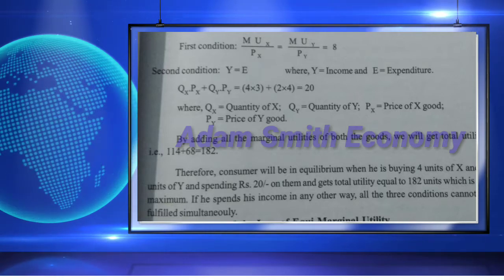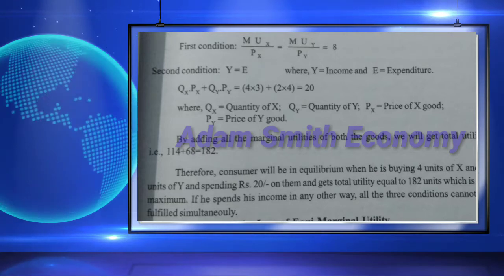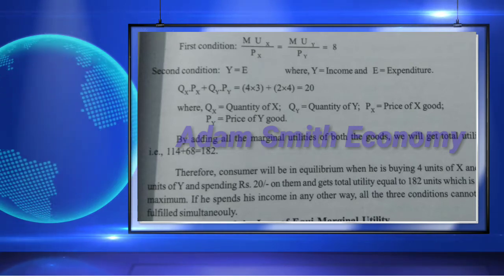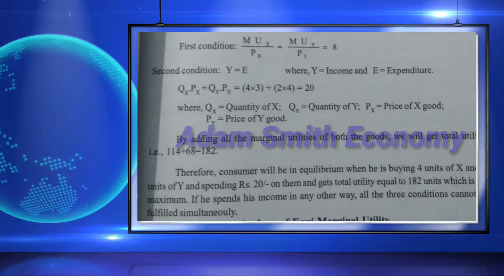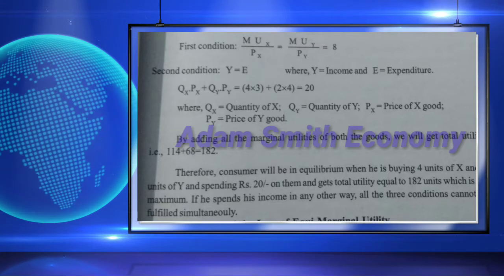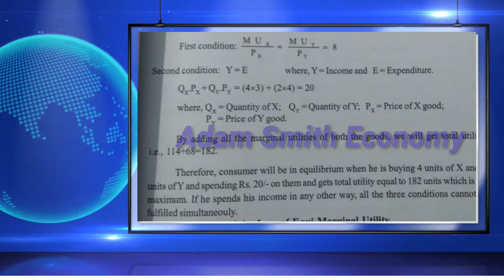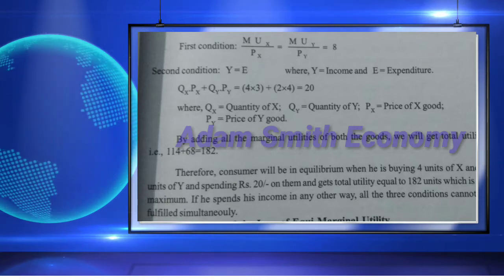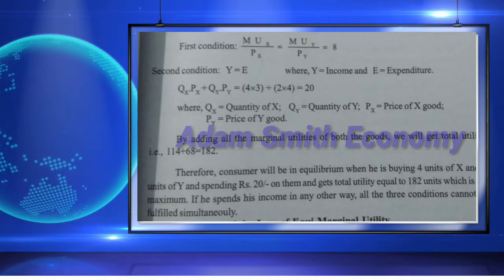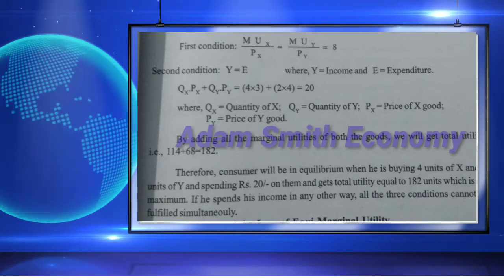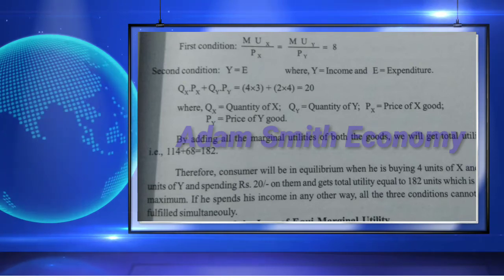The price of good X and price of good Y — by adding all the marginal utilities of both goods we will get total utility. For example, 114 plus 68 is 182. Therefore the consumer will be in equilibrium when buying four units of X and two units of Y, spending Rs 20 on them and getting total utility equal to 182 units, which is the maximum. If he spends his income in any other way, all three conditions cannot be fulfilled simultaneously.